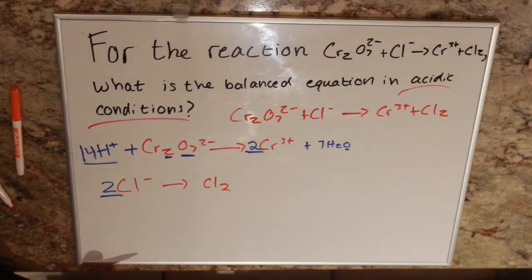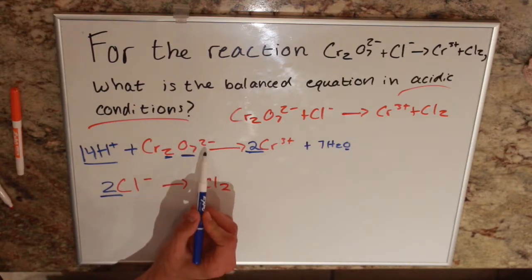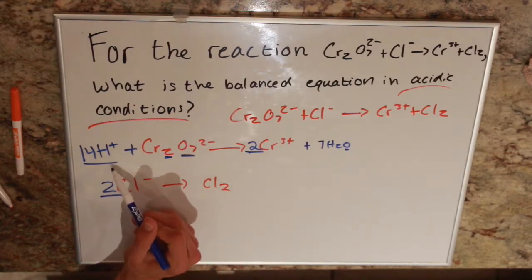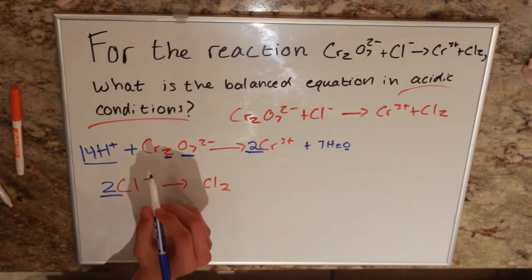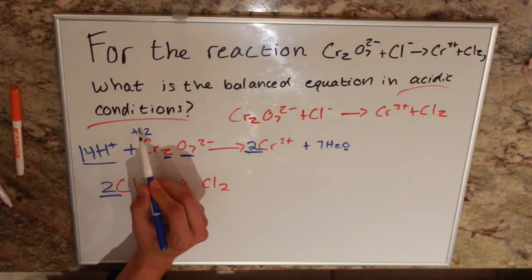But one thing that I did neglect to mention was our charges. So on this side of the equation of our half reaction we have 2- plus 14+. So our total charge on this side is +12.